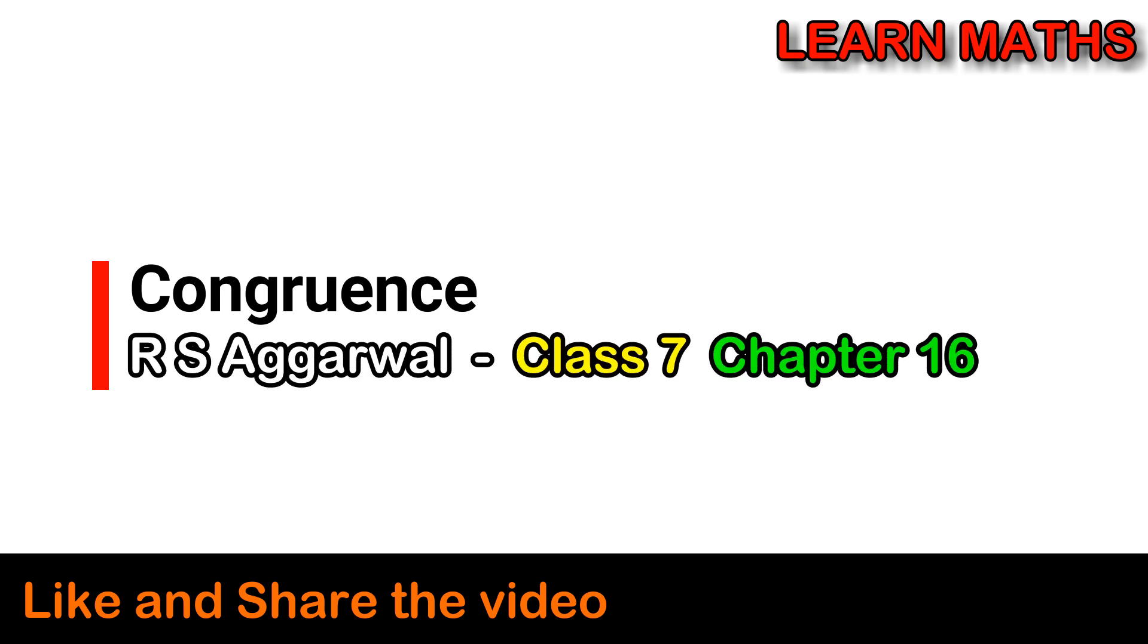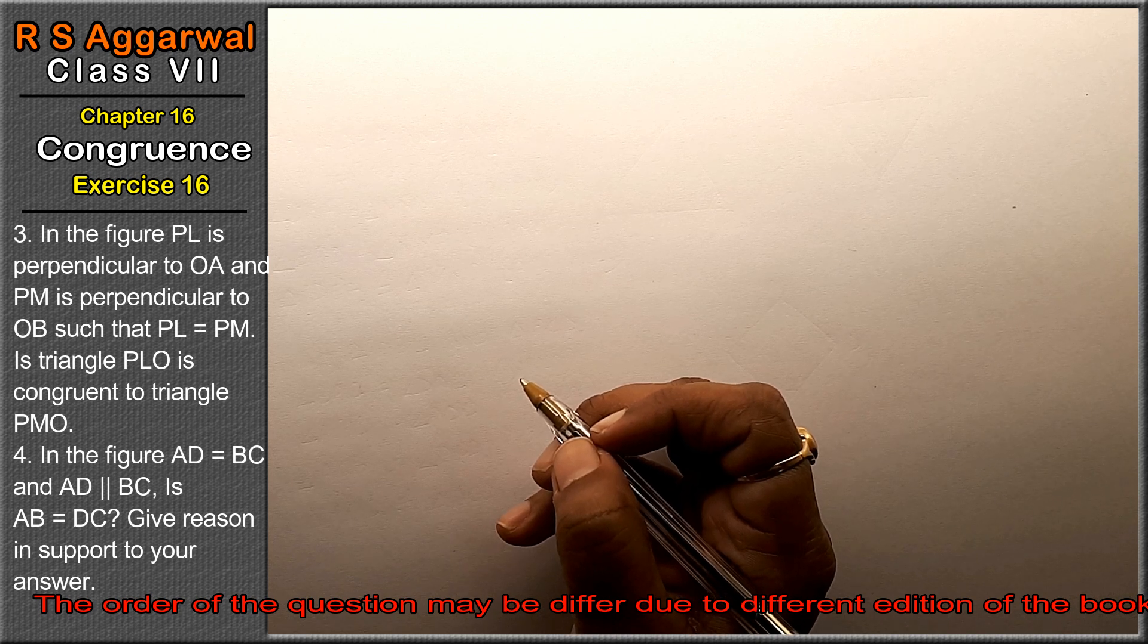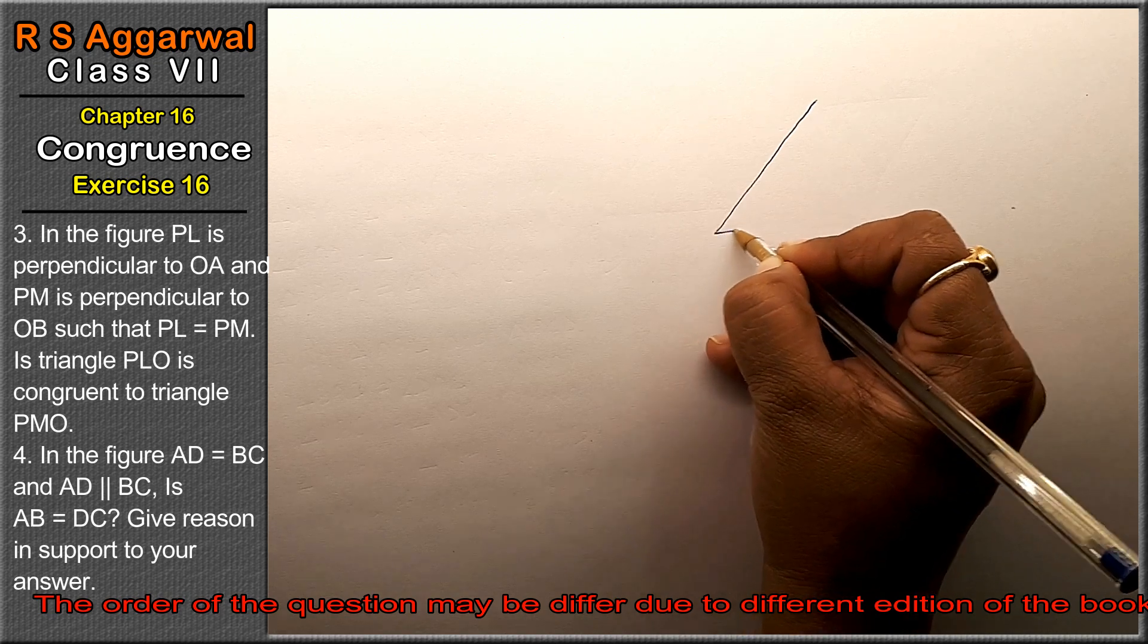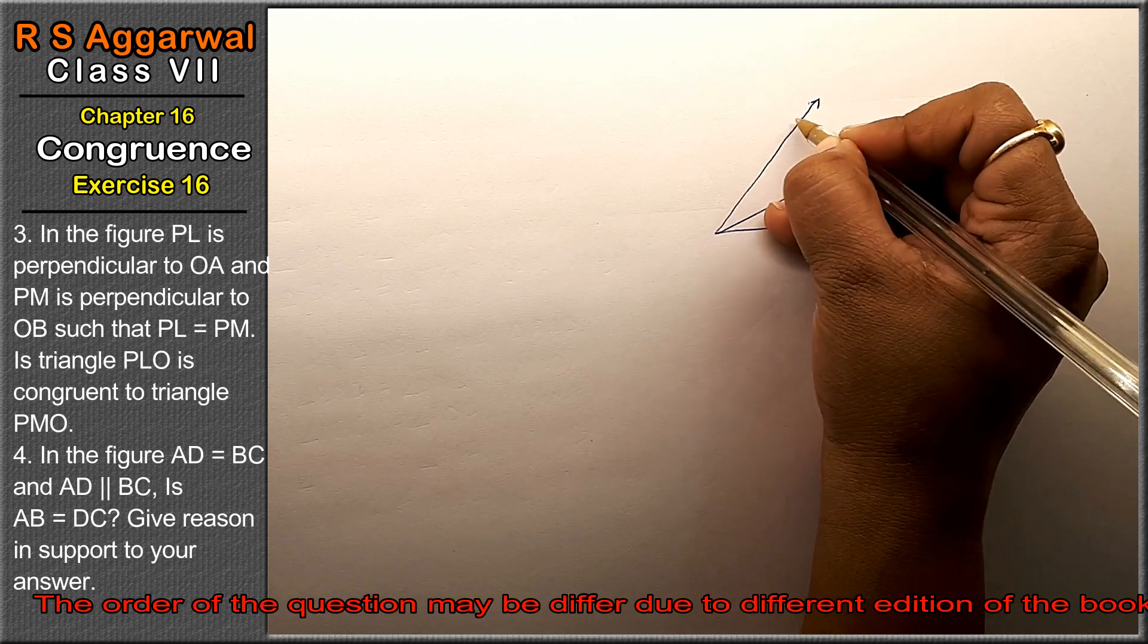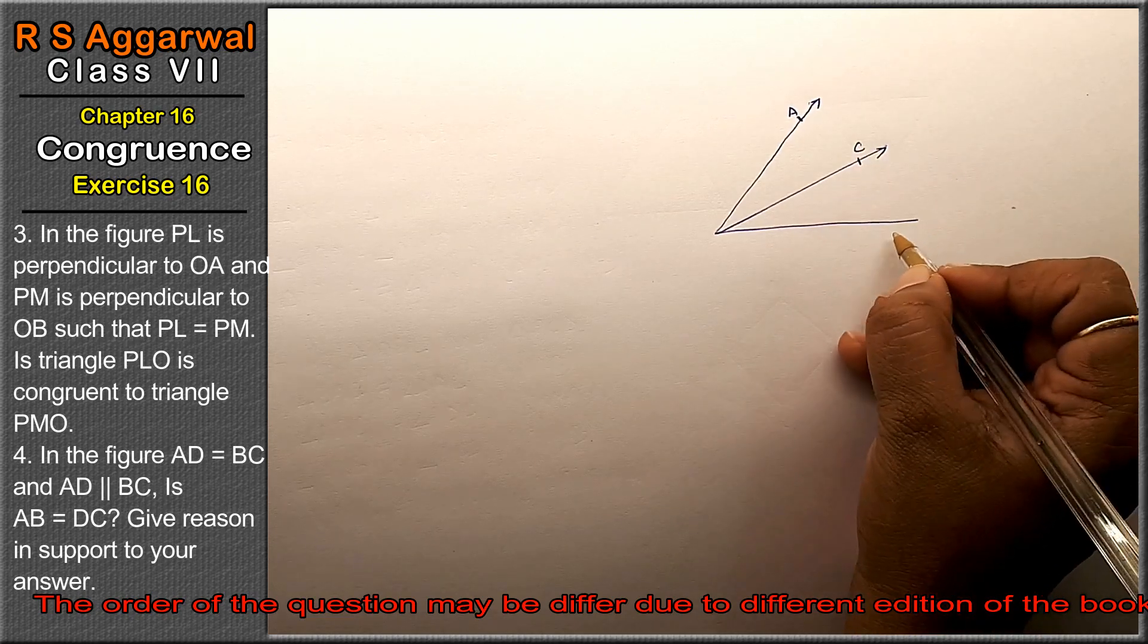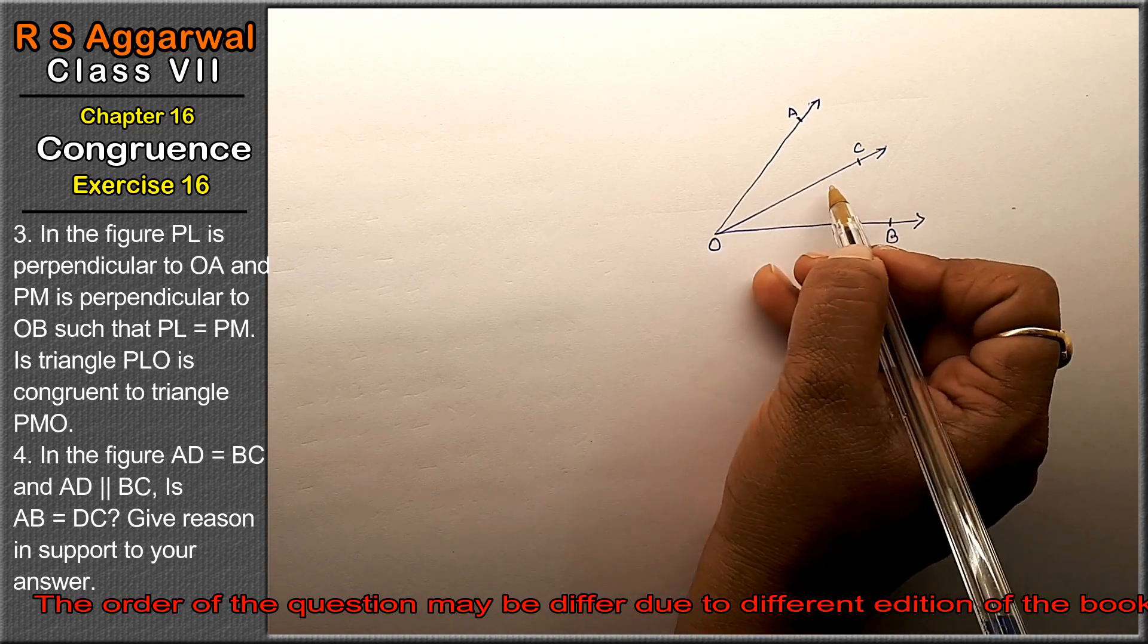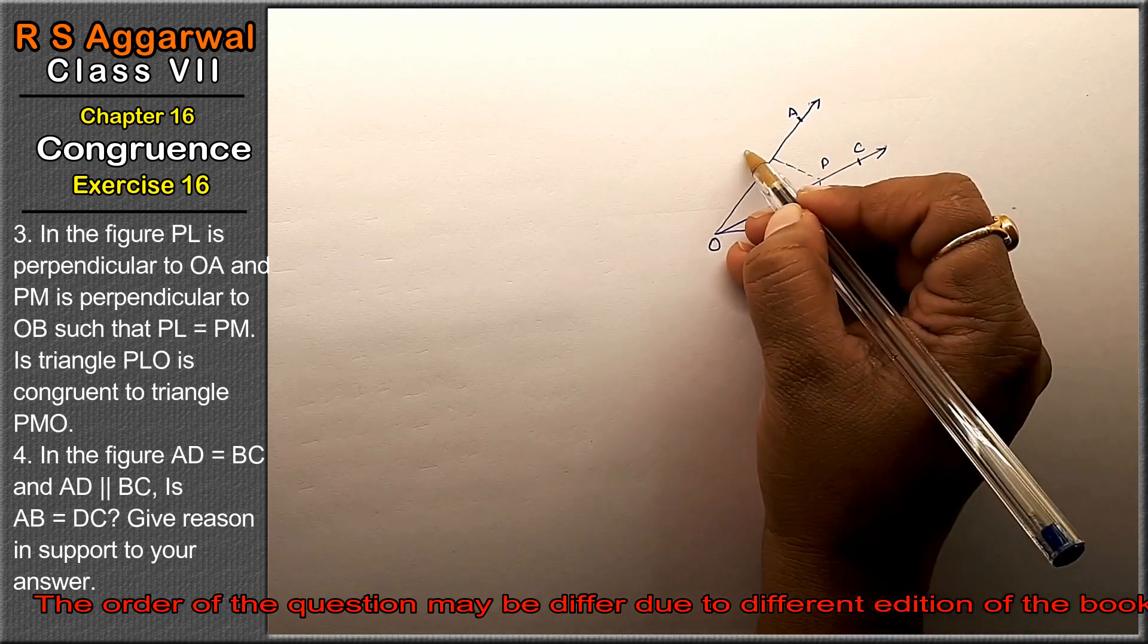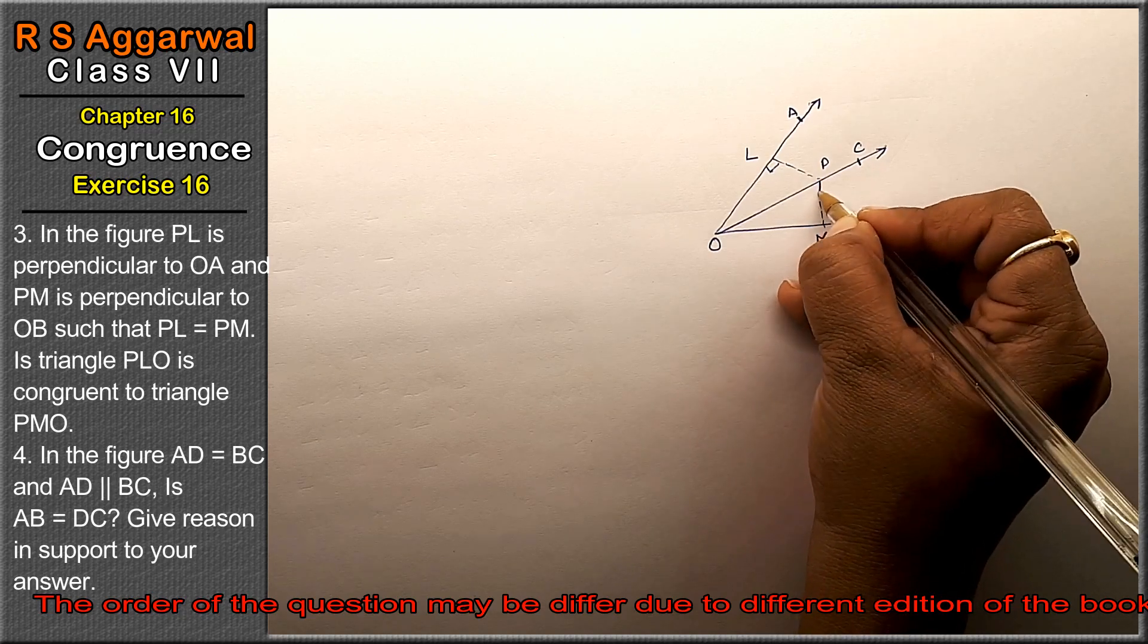Let's do question number 3 of Exercise 16, that is Congruence. Question number 3: In the figure, a figure is given to us. We have points A, C, and AB, and point O here.